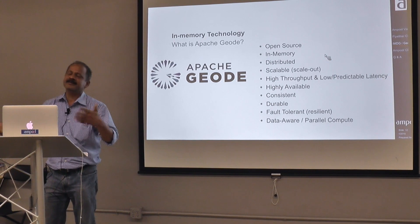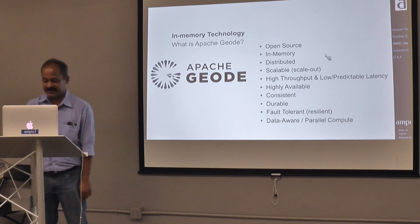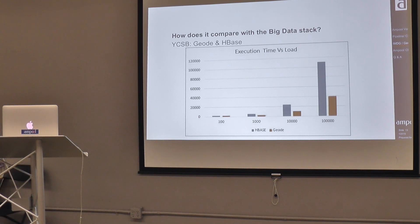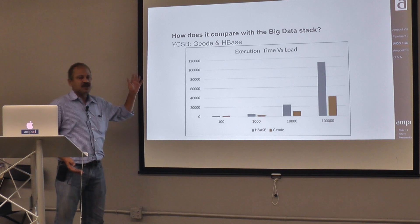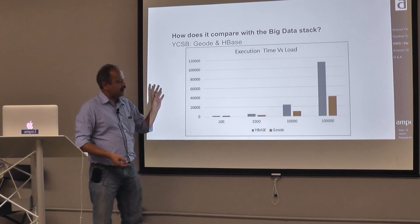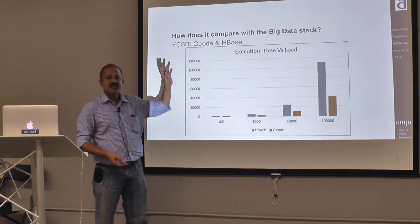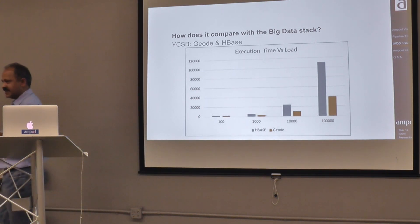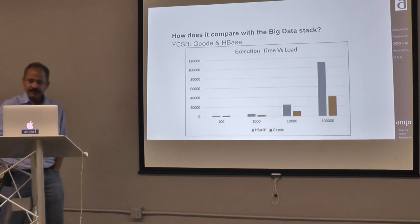Most of the community today is from two companies — Pivotal, which originally open-sourced it, and Ampoule, where we have a few engineers already contributing. I would really ask you, if you are interested in this space, to take a look at Apache Geode — this is great technology, already 10 years in the making. How does Apache Geode compare to the rest of the big data stack? The closest in use cases is obviously HBase, because HBase is also a memory-centric data store, though it uses HDFS underneath. Comparing with the standard YCSB benchmark — 50% inserts, 50% reads — even at just about 100,000 rows, you can see that Geode is made for speed and is three times faster than HBase.